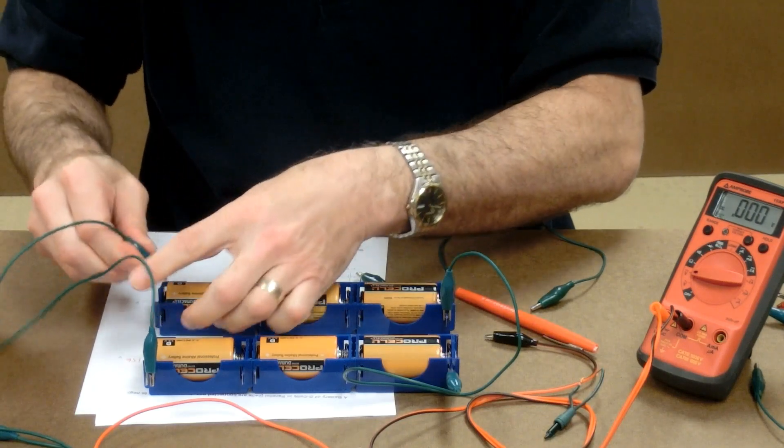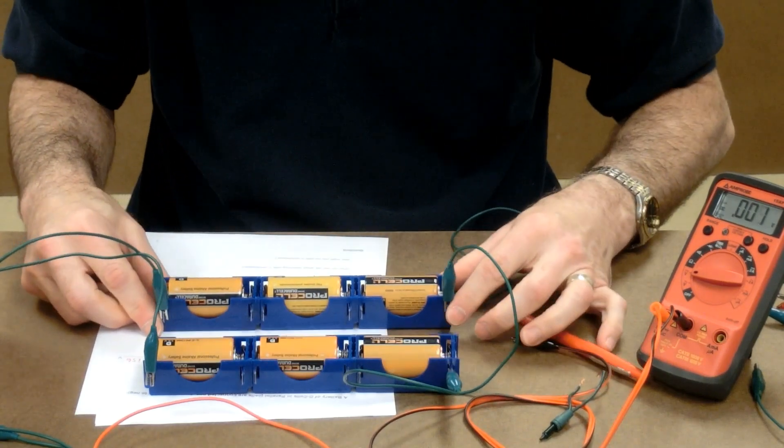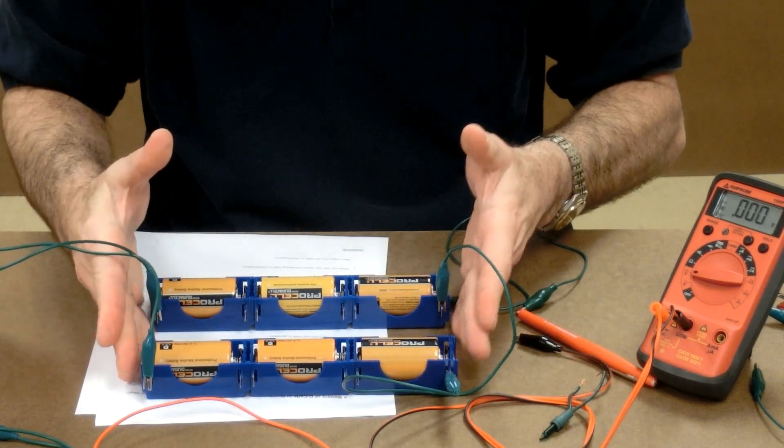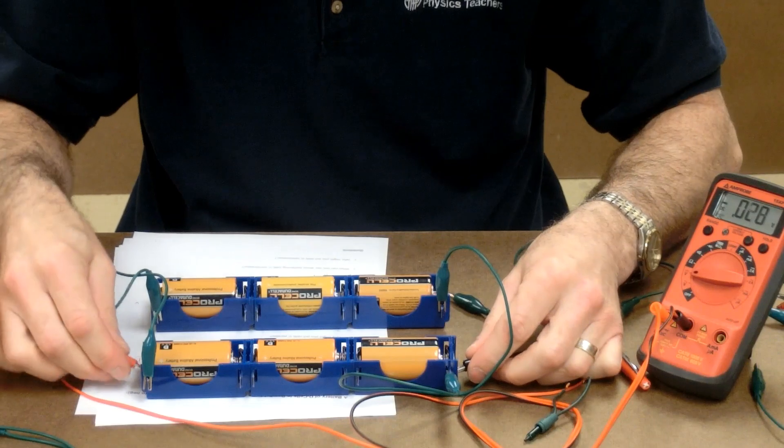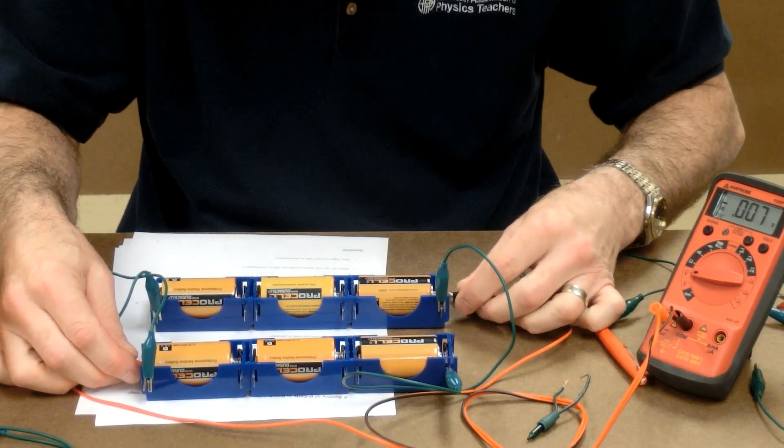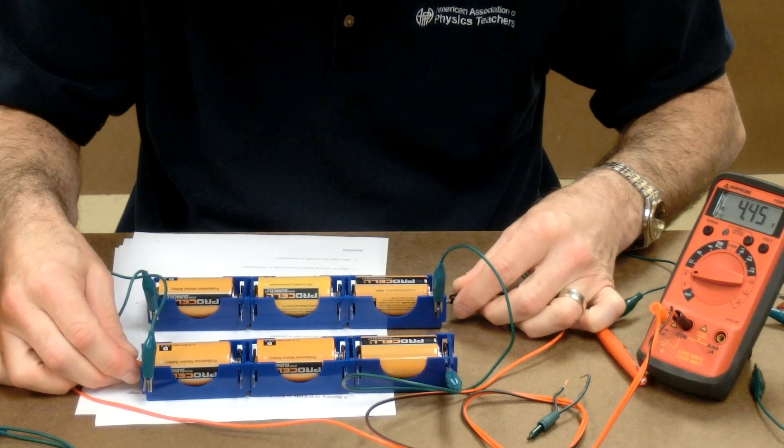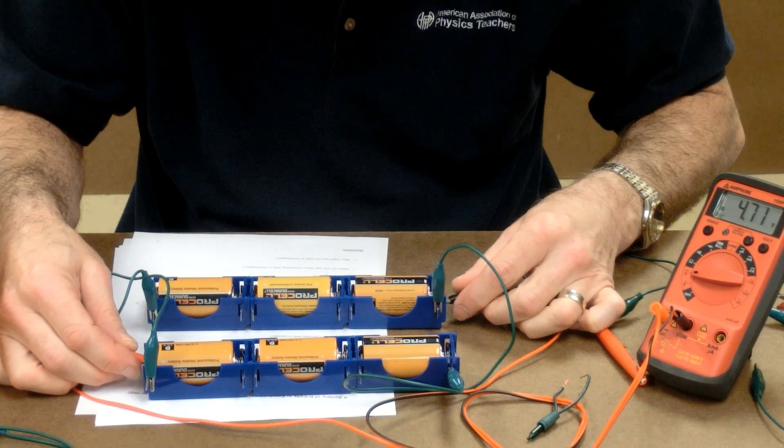When we put another row of three in parallel with it, it shouldn't change the voltage because adding cells in parallel doesn't change the voltage. So, we should still get around 4.8 volts. 4.72 is what it's reading. It's fluctuating, 4.72.